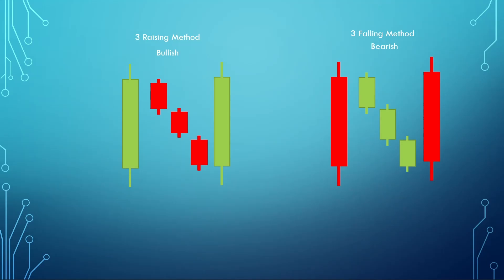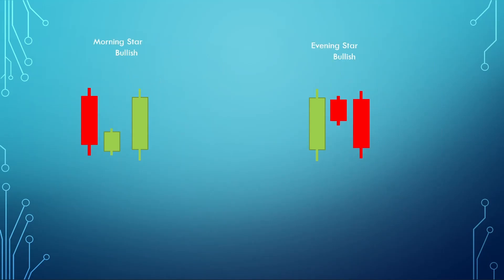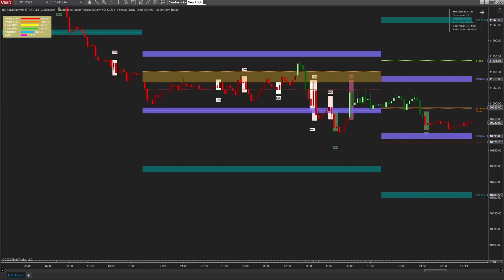The Morning Star is a three-bar pattern found in a downtrend, signaling a possible reversal. The first bar is a large-bodied bearish bar, followed by a small-bodied bullish candle that closes in the lower third of the previous bar's range. This is then followed by a large-bodied bullish candle that closes near the high of the large bearish candle. The Evening Star is the exact opposite of this.